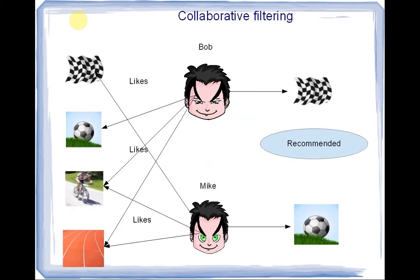Here is a collaborative filtering-based recommendation system. There are two users, Bob and Mike, who follow the sports articles of an online news website. Bob and Mike have some overlapping interests and some non-overlapping interests. The system recommends based on the similarity between Bob and Mike — this is an example of a collaborative filtering system.